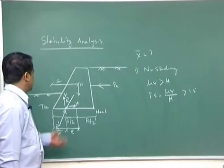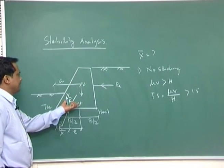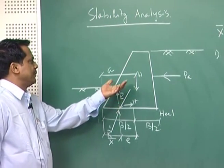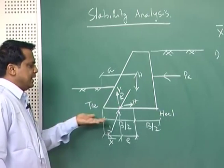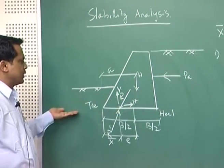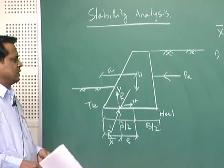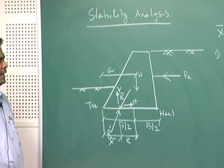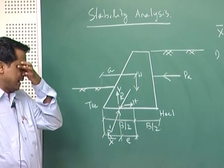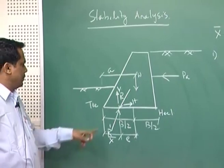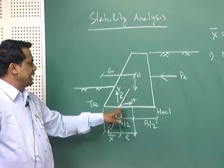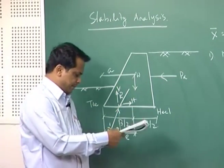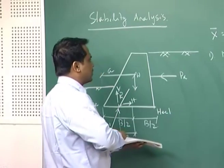No sliding means this wall should not slide. If the factor of safety is less than 1.5, the entire wall will slide along the base. So for no sliding, the factor of safety should be greater than 1.5. If it is less than or equal to 1.5, a shear key may be provided at regular intervals below the base of the wall, as we will see in the example problem.